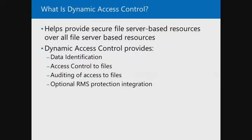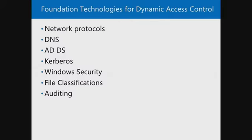We'll cover the basic ideas of what Dynamic Access Control is, how to work with it, and what you can use it for. Supporting it involves Active Directory, claims-based authentication, working DNS, Kerberos tickets, security descriptors, access control entries and lists, file classifications, and auditing.